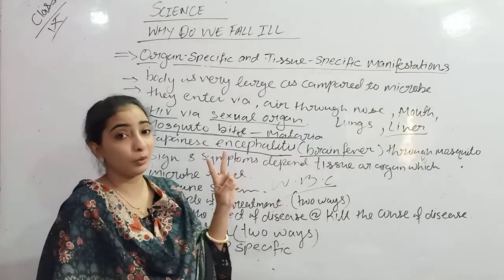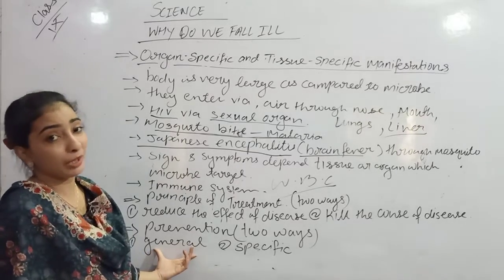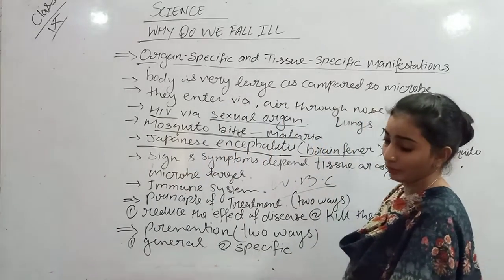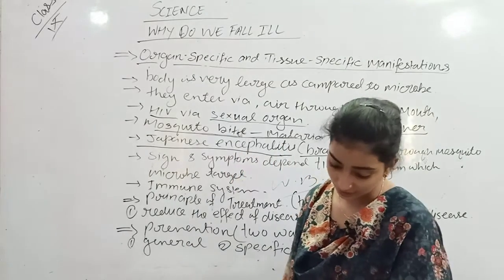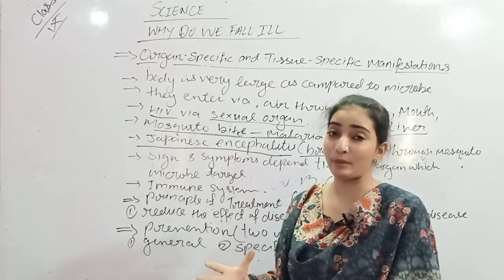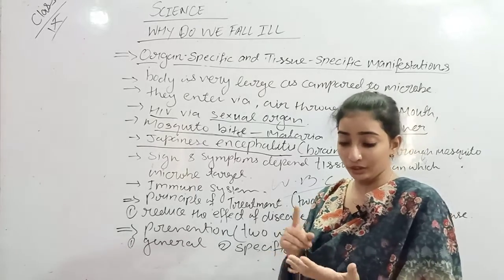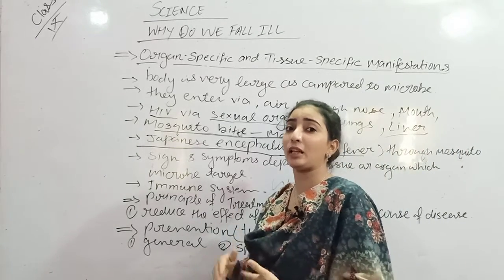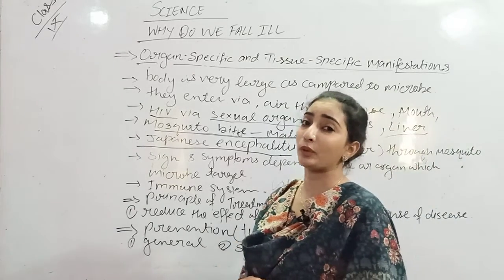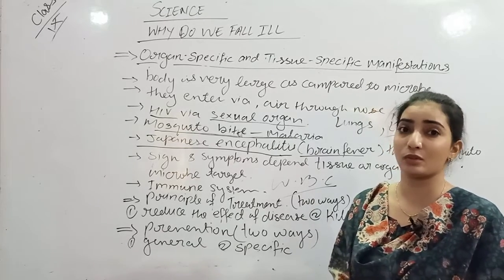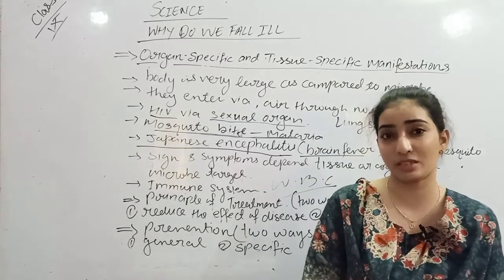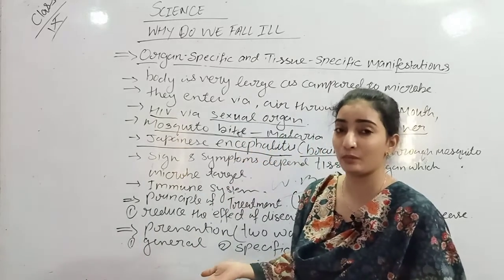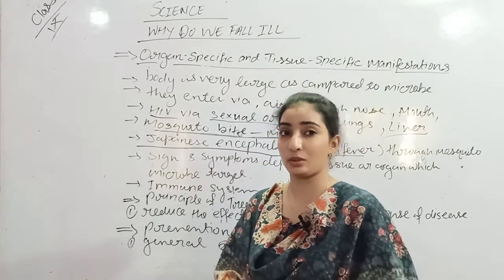Prevention is the second approach. There are two ways to prevent any disease. Generally, we can prevent disease through the routes microbes use - air, water, soil, or food - by protecting ourselves. For example, if someone normally has a strong body, they should avoid crowded places so they don't catch colds and coughs from others.